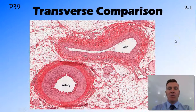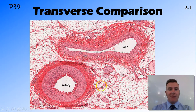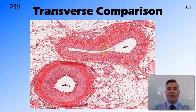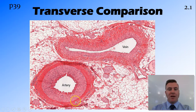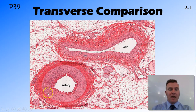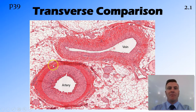A quick comparison: the vein has the larger lumen but an irregular shape, while the artery is smaller with a nice circular shape, and has a large layer of smooth muscle holding the pressure on that artery.